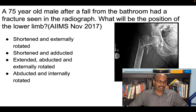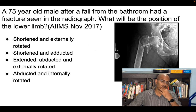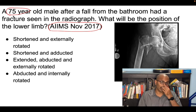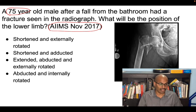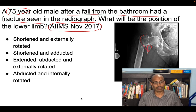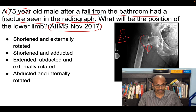Now let us look at three practice questions. The first, from AIIMS November 2017: a 75-year-old female patient, who as noted is in the 70–90 year age range pointing to an IT fracture, fell in the bathroom and had a fracture seen on radiograph. On the radiograph you can see the lesser trochanter and the greater trochanter, and the fracture line passes through both trochanters — confirming this is an IT or extracapsular fracture, outside the capsule.